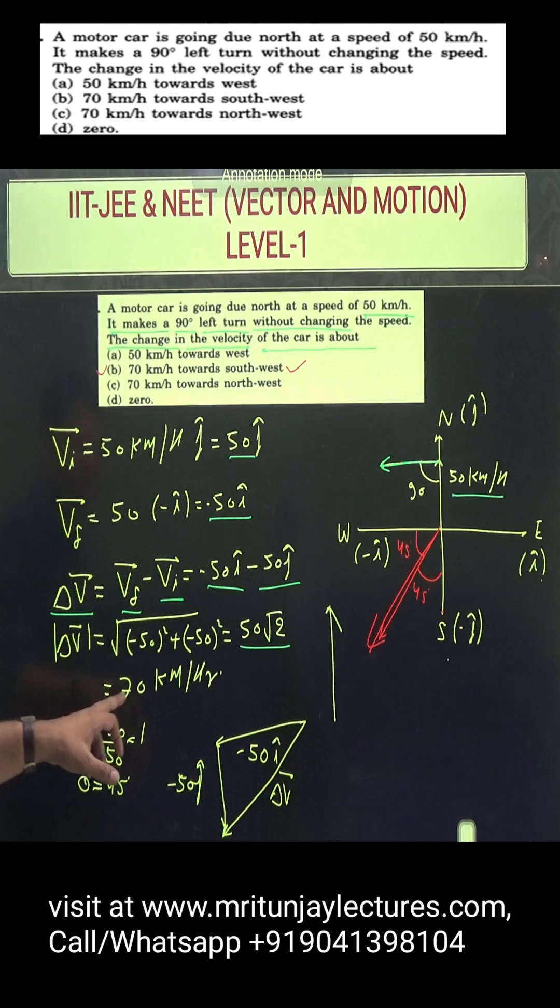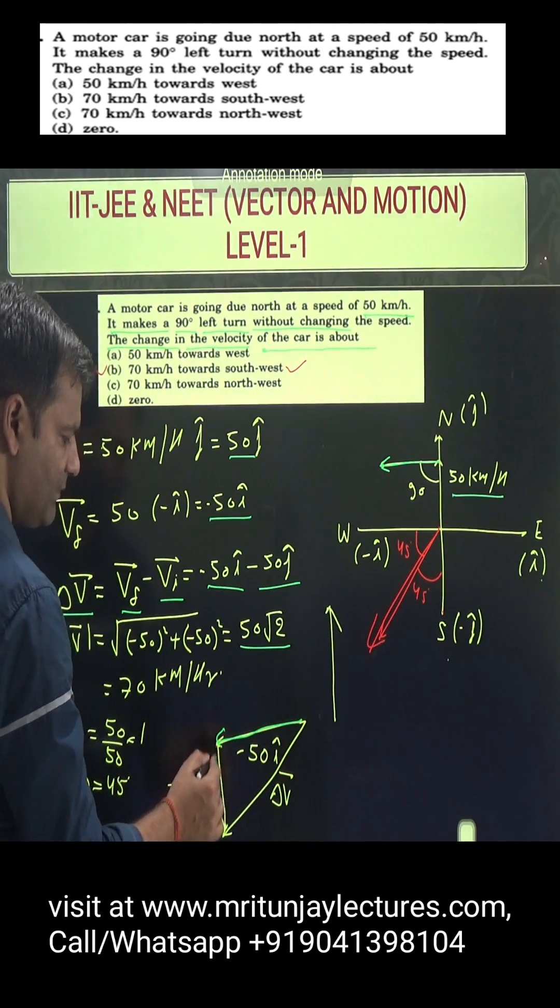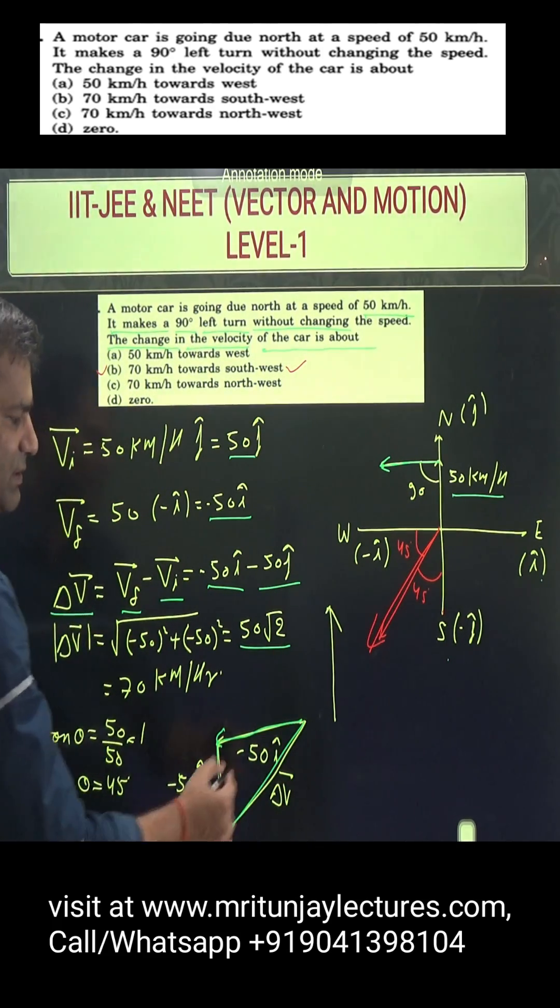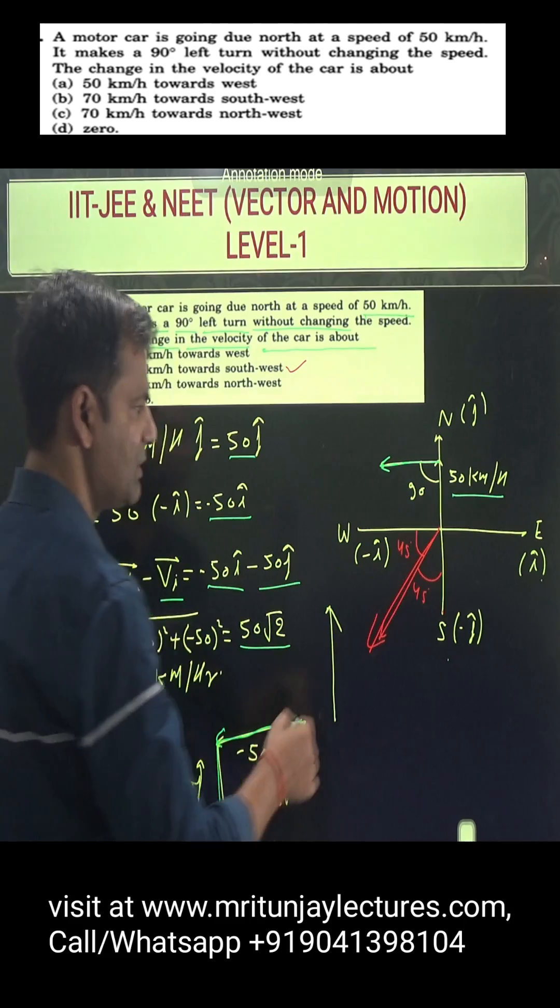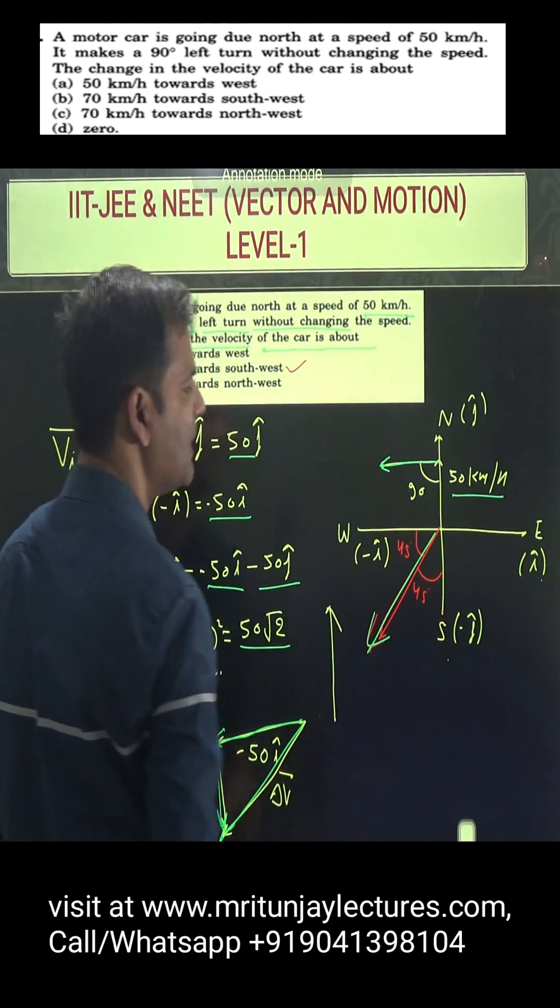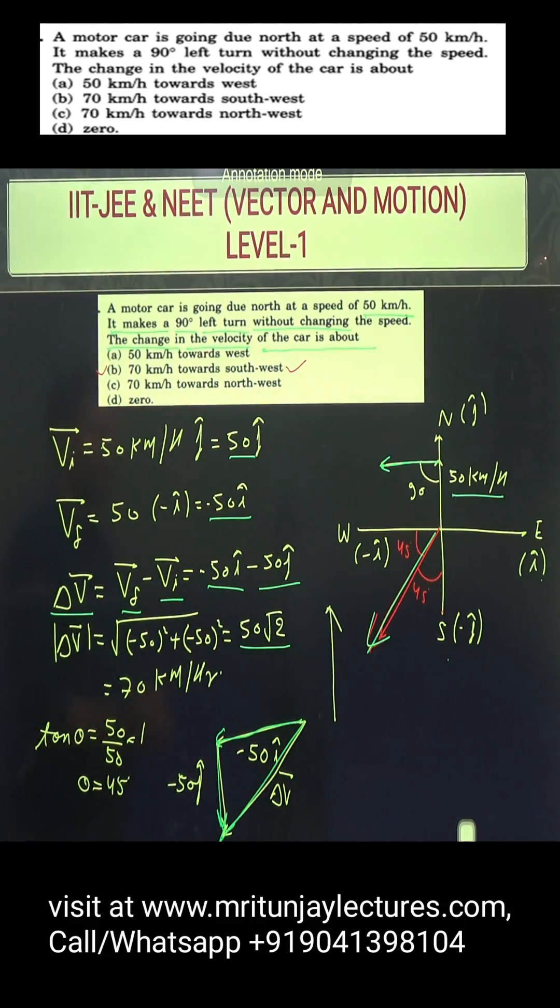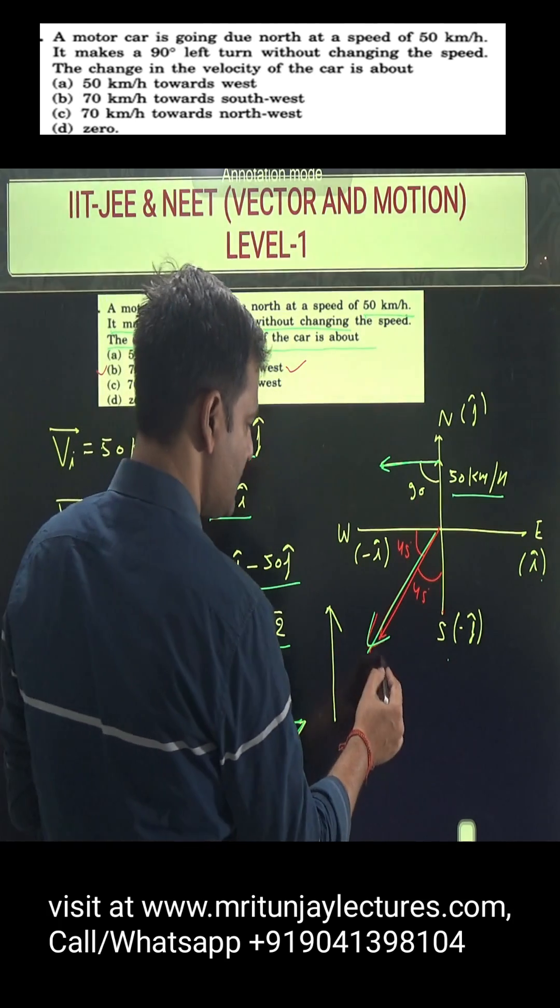What about direction? First of all, make a diagram. This is 50 by 50, so theta is 45 degrees. The direction is 70 kilometer per hour.